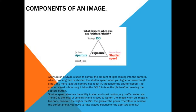Now we'll be looking at the components of an image. The components of the image have three different things in a triangle. The first one is ISO, the second one is aperture, and the third one is shutter speed. The aperture on the DSLR is used to control the amount of light coming into the camera, which may lengthen or shorten the shutter speed when you raise or lower the f-stop. The more light the camera has to let in, the longer the shutter speed. The shutter speed is how long it takes the DSLR to take a photo after pressing the capture button, and is also the ability to stop or start motion, e.g. traffic or water.